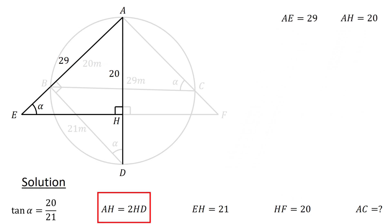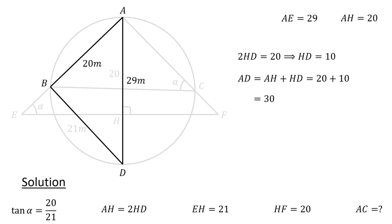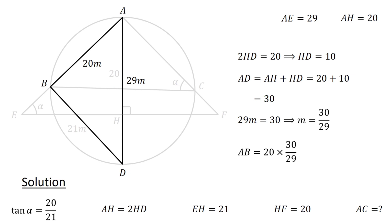Since AH equals 2HD, we have 2HD equals 20 units, and so HD equals 10 units. The length of AD, which equals AH plus HD, equals 20 plus 10, or 30 units. Going back to triangle ABD, since AD also equals 29M, we have 29M equals 30, and so M equals 30 over 29. The length of AB, which equals 20M, equals 20 times 30 over 29, or 600 over 29 units.